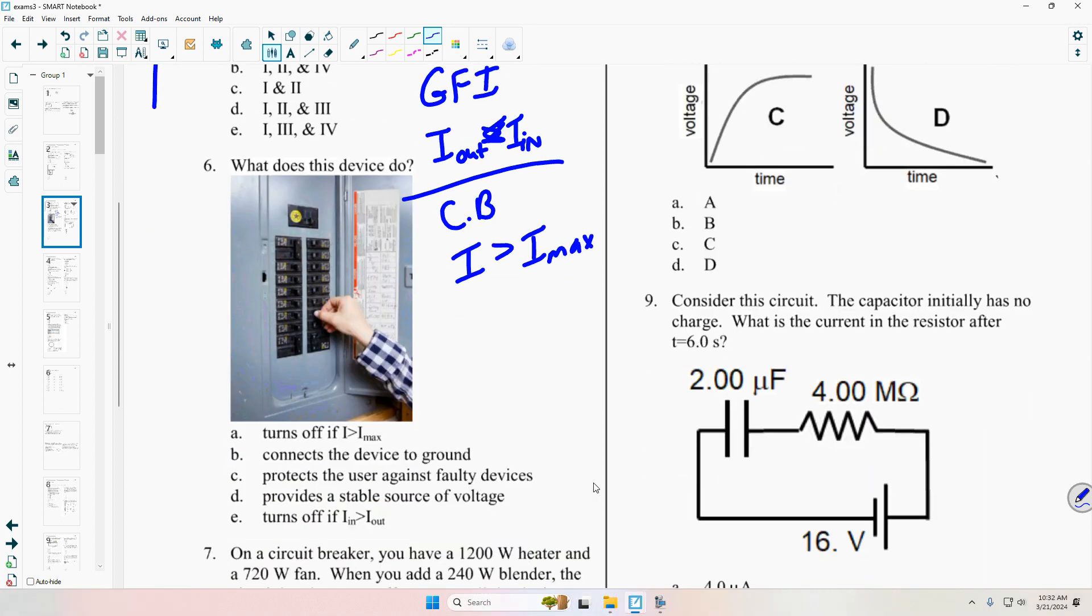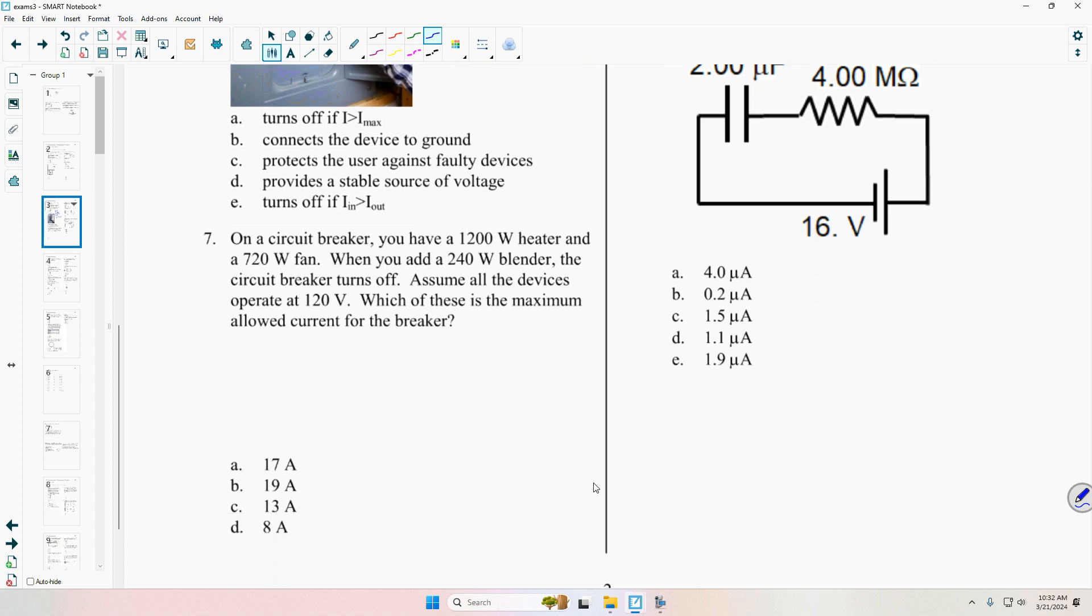And then for the circuit breaker, I often give a question like this, number seven. I think we did this question in class, actually. If I want to know what is the maximum allowed current for the circuit breaker, I first just calculate the current for each individual device. The voltage is 120, and so I is equal to P divided by V. So that's 1200 watts divided by 120 volts, which would be 10 amps. 720 divided by 120 is 5 amps. 240 divided by 120 is 2 amps.